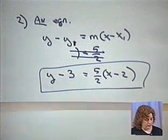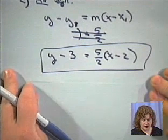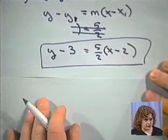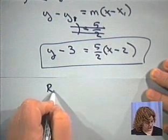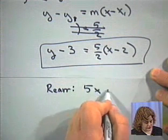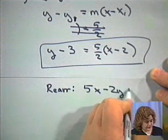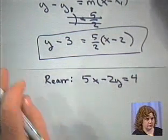However, I'm going to go ahead and show you what it is rearranged in standard form, how it works out, because a lot of books give you answers in standard form. And when you rearrange this, you will end up with 5x minus 2y equals 4 for the standard form of the equation.